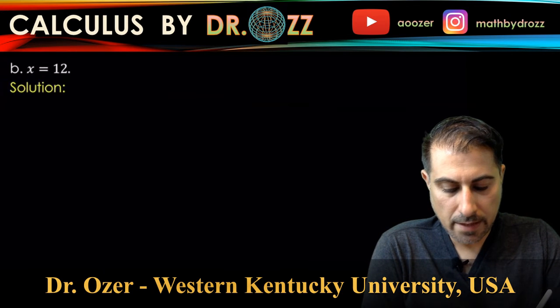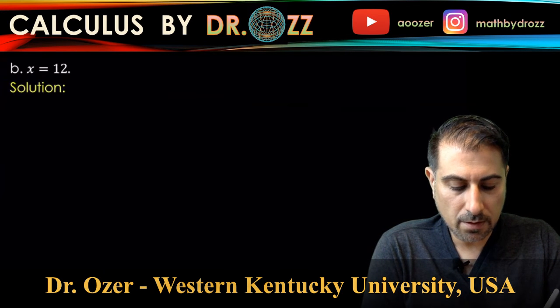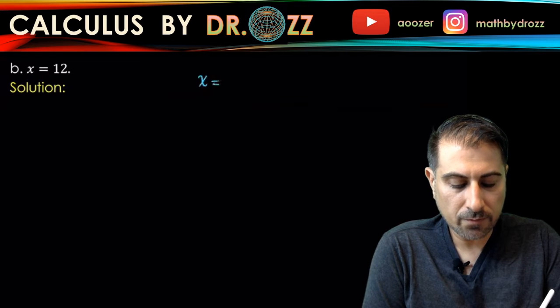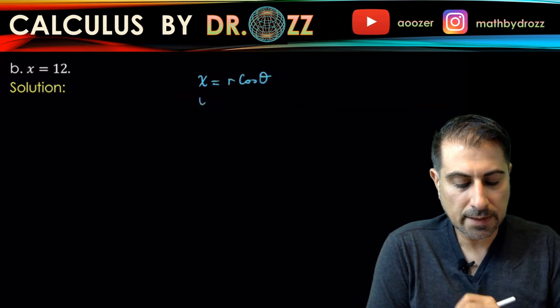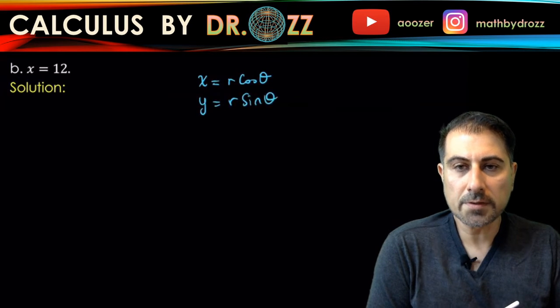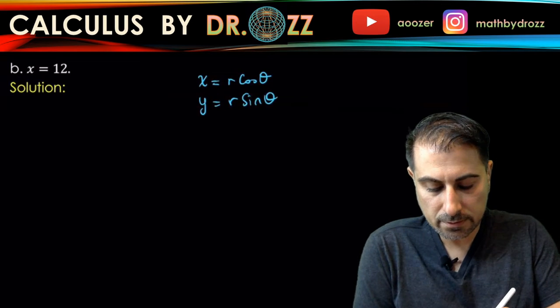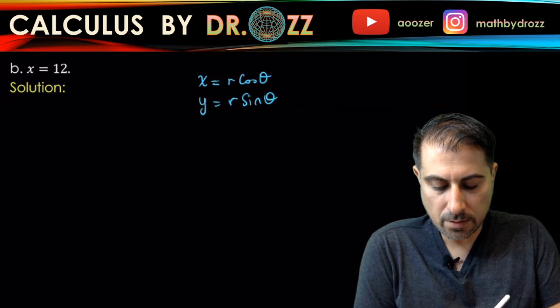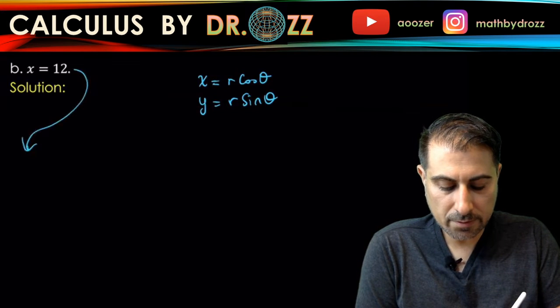So we have x equals r cosine theta and y equals r sine theta. All I'm going to do is just write r cosine theta for x here. So r cosine theta is 12.